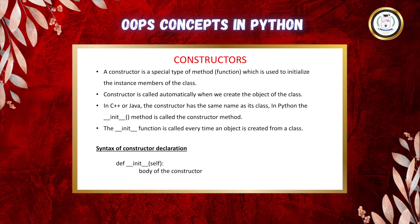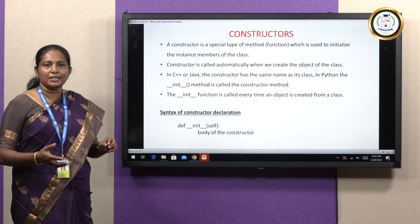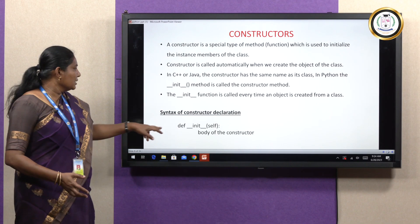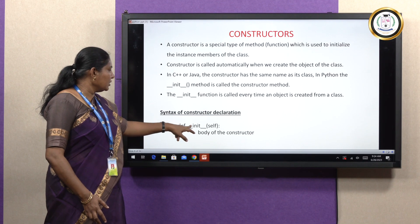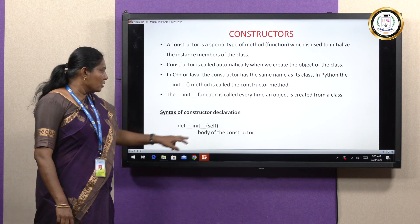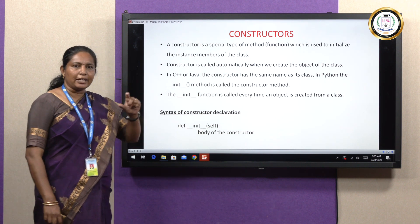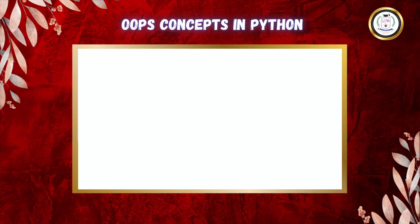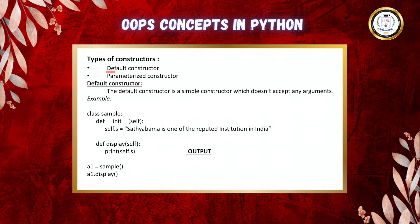In C++ or Java, the constructor has the same name as its class. In Python, we have a special method called the __init__ method. Here, 'def' is a keyword, and __init__ is the constructor method, preceded and succeeded by double underscores. Self is a parameter, and this statement is terminated with a colon. The body of the constructor contains the set of codes for the constructor. There are two types of constructors: default constructor and parameterized constructor.